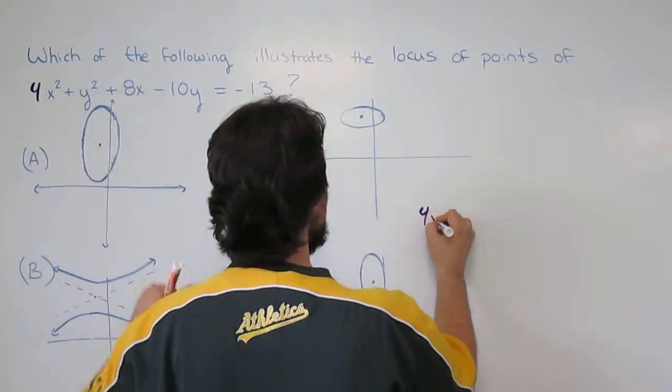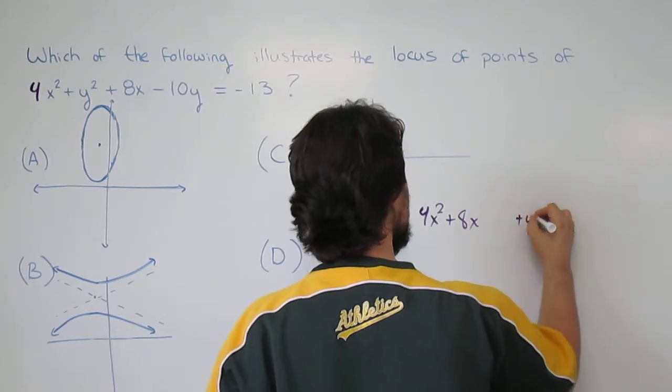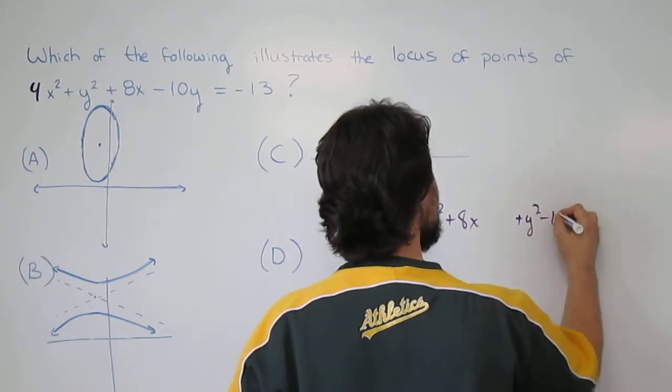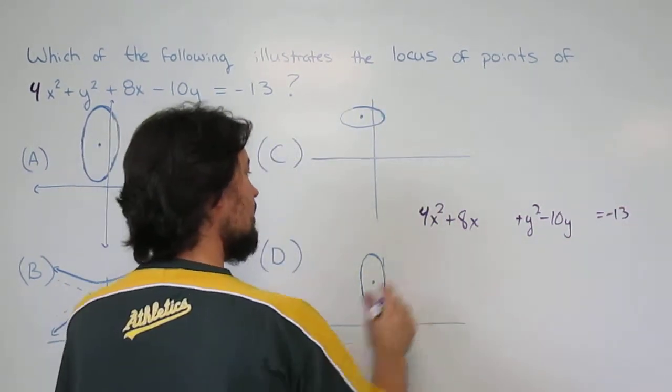I'm going to go ahead and put the 4x squared with the 8x, leave a little space, get a little y squared minus 10y equals negative 13. At this point I'm going to pull out 4 from this.